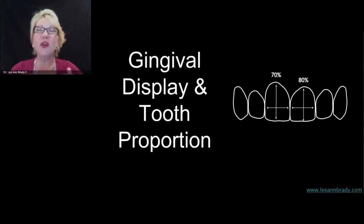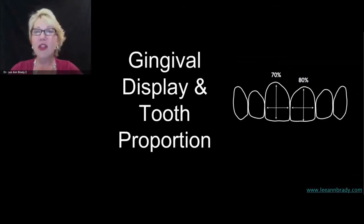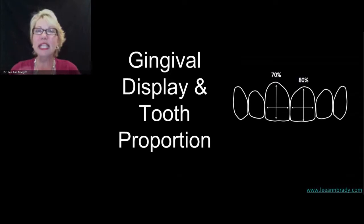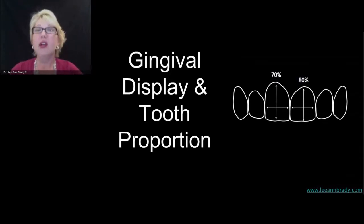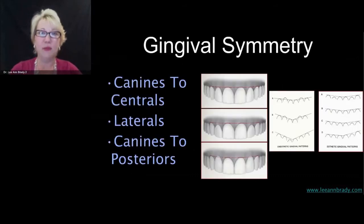So we figure out the position of the gingival crest by using incisal edge position and what we know about tooth proportion — somewhere between 70 and 80 percent width-to-length ratio for the upper incisors: both the canines, the laterals, and the centrals.